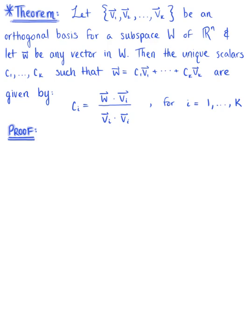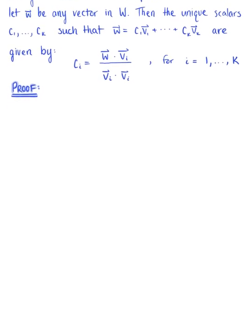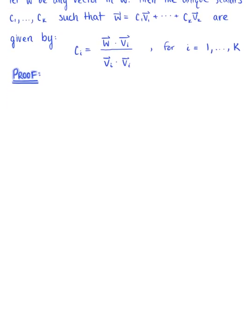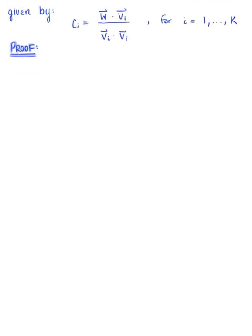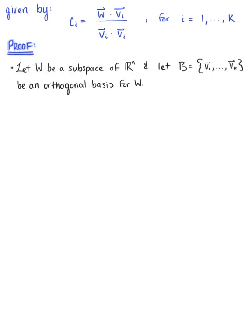So let's go ahead and prove this theorem to verify the formula for these coordinates. We want to let W be a subspace of R^n, and we want to let B be equal to the set of vectors v sub 1 through v sub k, which is an orthogonal basis for the subspace W.